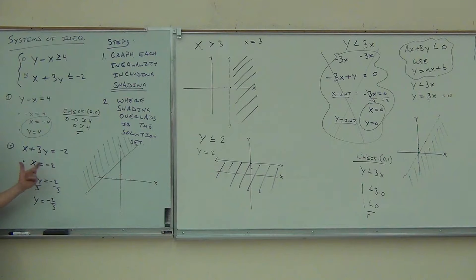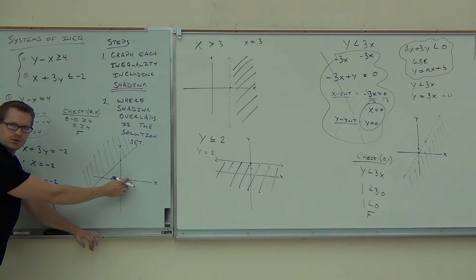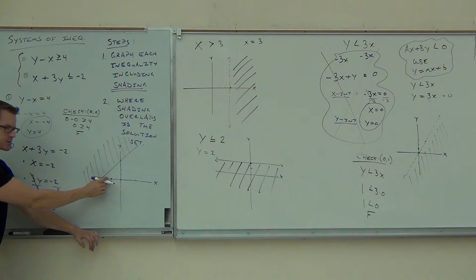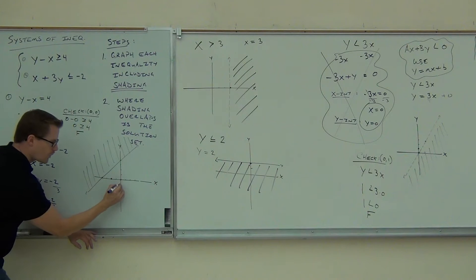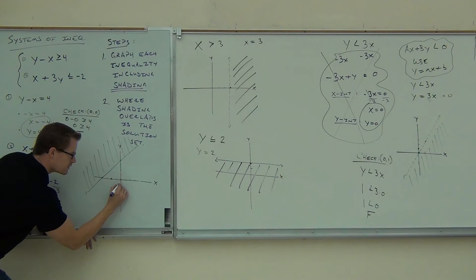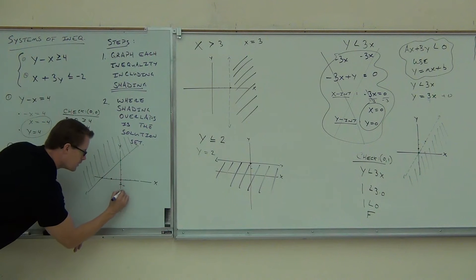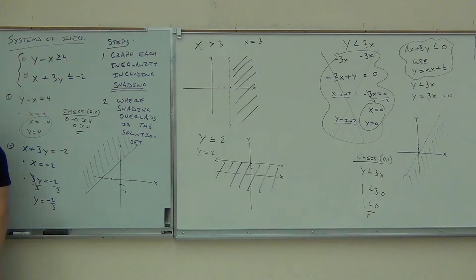My x-intercept is negative two. That's right here. Make sure you know your negatives and your positives. If you're putting negative two over here, you have the wrong idea. It's going to be a completely different looking line. So negative two on the x-axis. Negative two-thirds, it's not up here, it's down here. Where is negative two-thirds? Is it below negative one or above negative one? Just a little bit above. So here's negative one and negative two. We're just a little above that because we're at negative two-thirds.